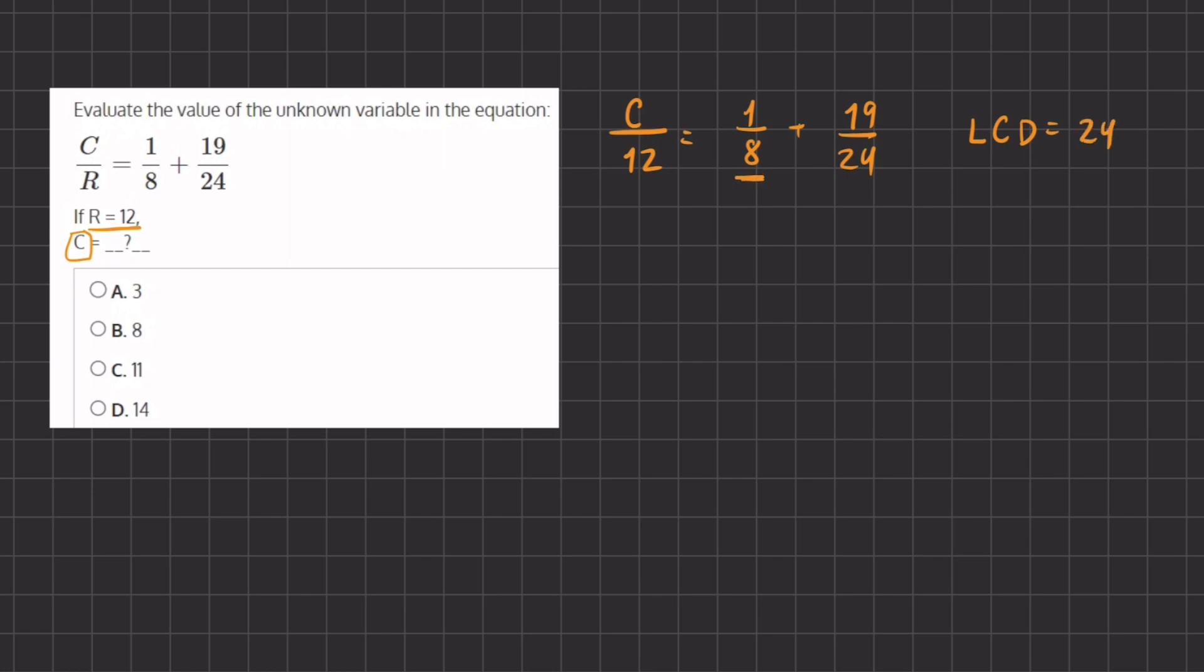Now in order to create a 24 denominator for this 1 eighth, we need to multiply the numerator and denominator by 3. So it's going to look like this. We have c divided by 12 on the left hand side and we have 3 divided by 3, which is 1 times 1 divided by 8 plus our 19 divided by 24.